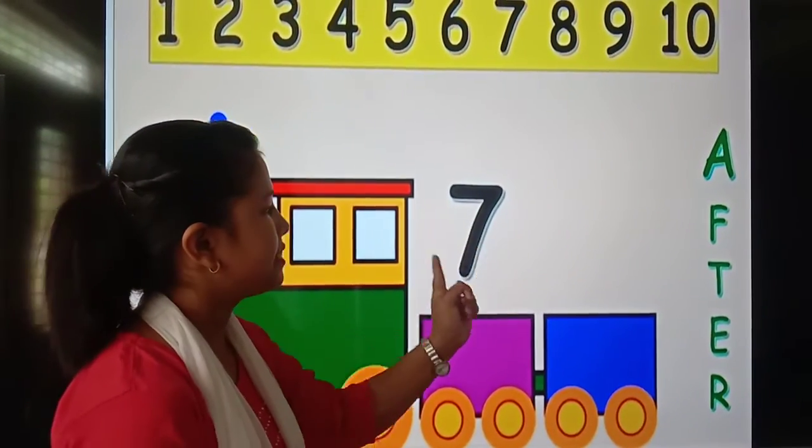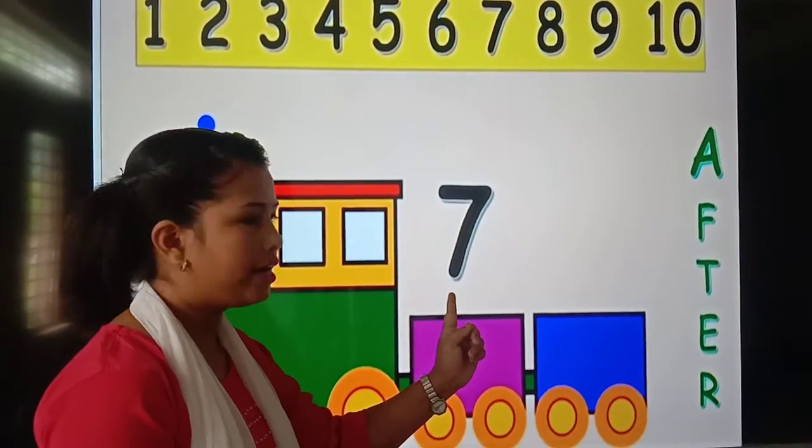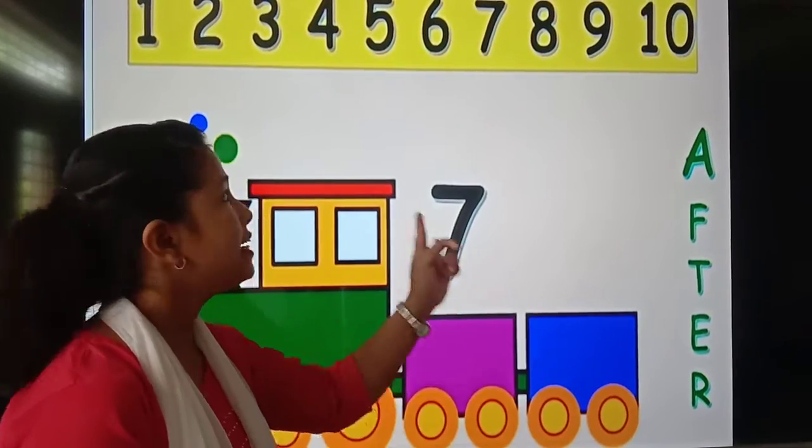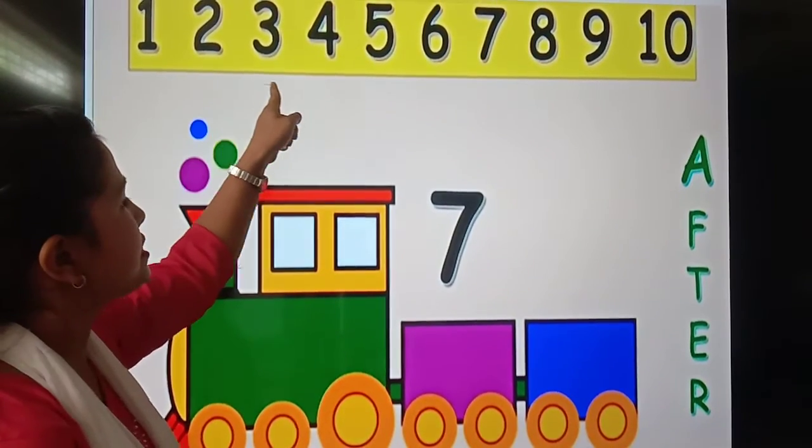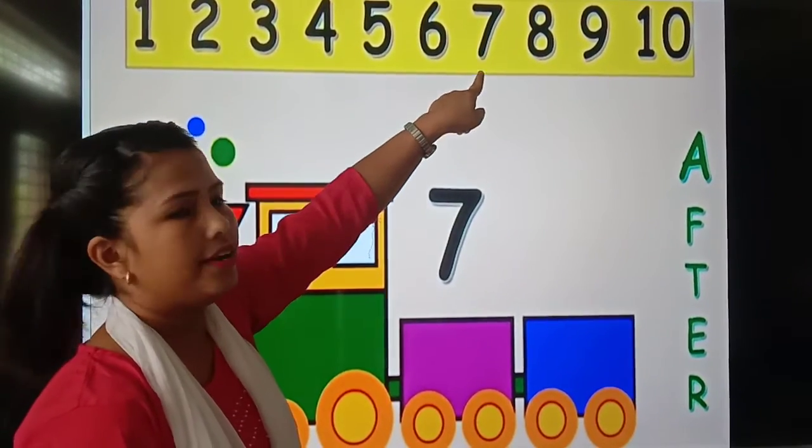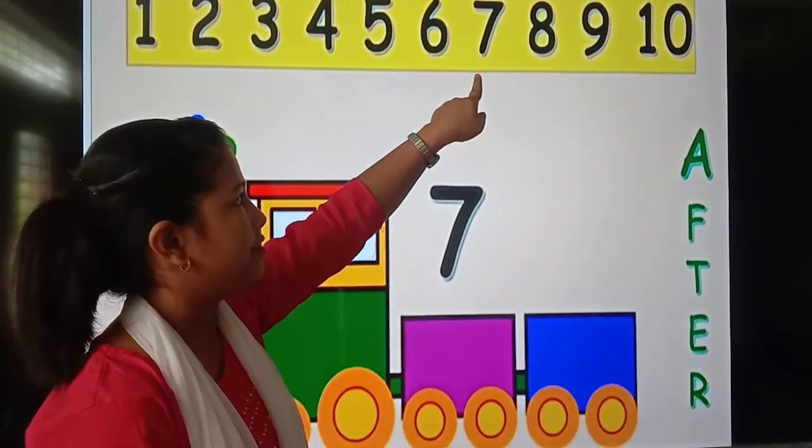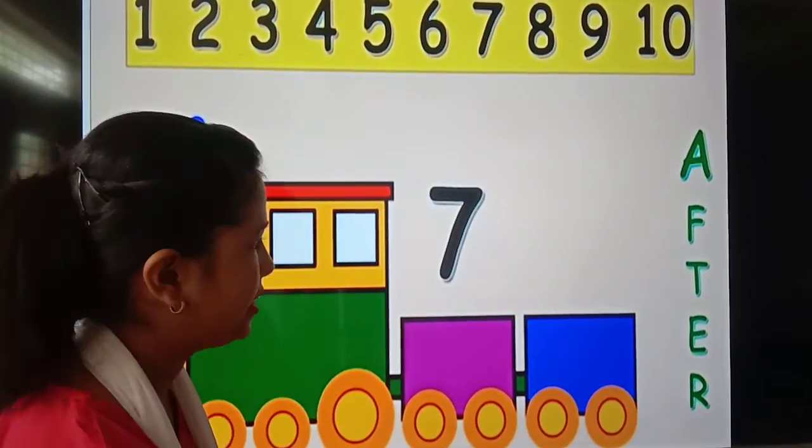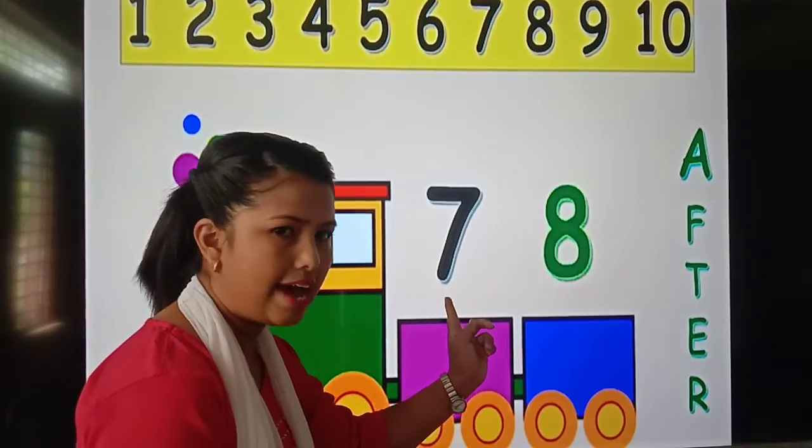Next, which number is this? 7. What comes after 7? See the number line. Where is 7? Yes, here is 7. After 7 is 8. 8 comes after 7.